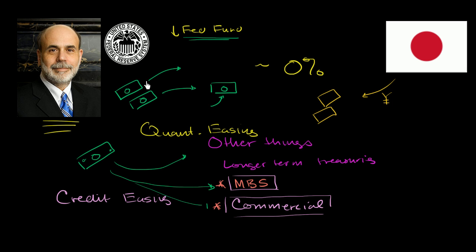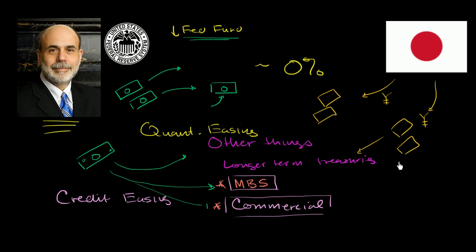Once at 0%, Japan really couldn't lower that interest rate anymore — and that's exactly what Bernanke faced with the US credit crisis. So Japan said: we still want more money to enter circulation, so we're going to keep printing yen. But since buying short-term debt is no longer useful — we've already lowered short-term interest rates as much as possible — let's use this money to buy other things and get it into circulation any way we can. So they bought long-term Japanese treasuries and corporate debt. Their intention was literally just to increase the quantity of money — pure quantitative easing.